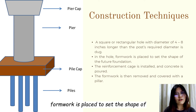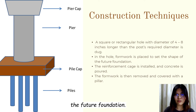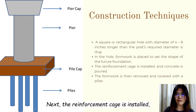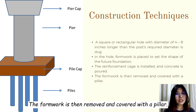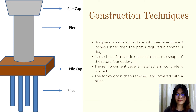Then, in the hole, formwork is placed to set the shape of the future foundation. Next, the reinforcement cage is installed and the concrete is poured. The formwork is then removed and covered with a pillar.